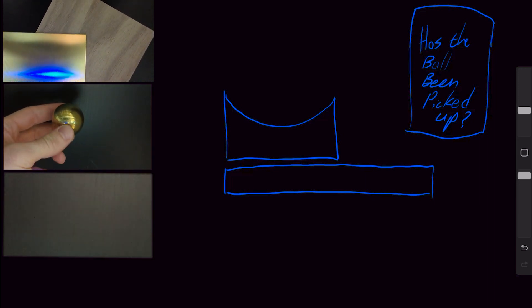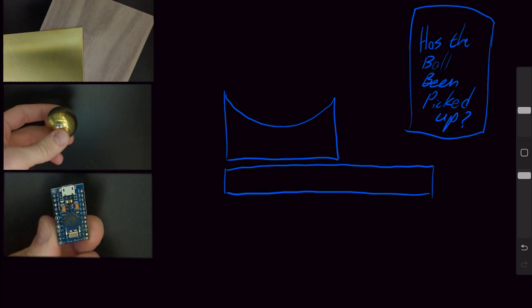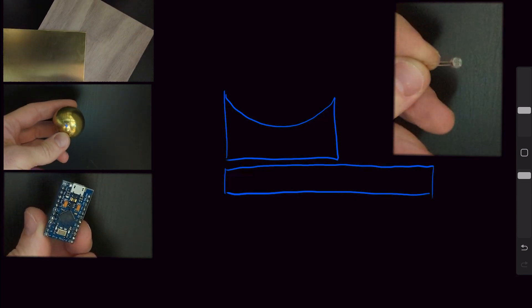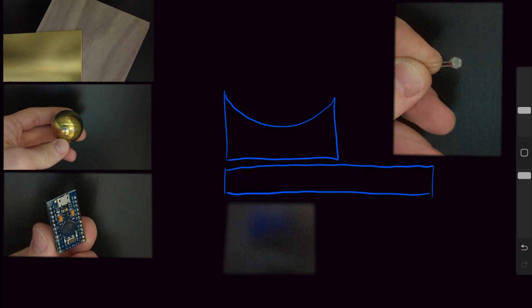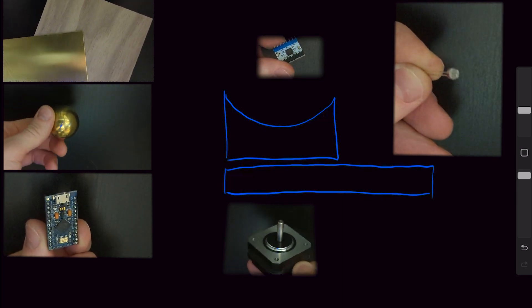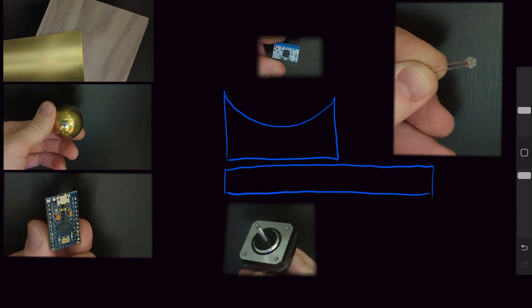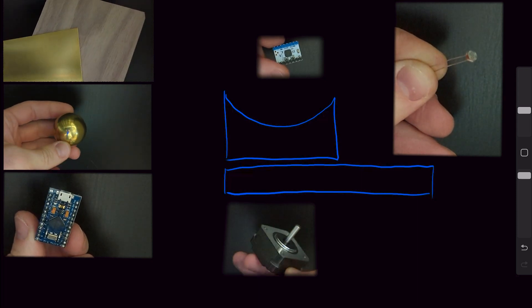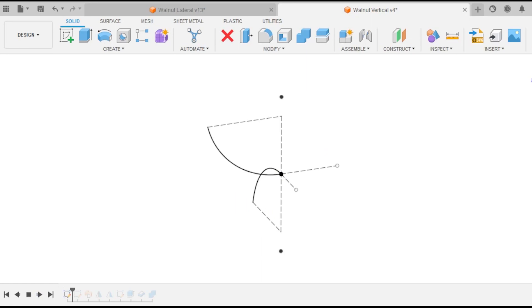For the electronics, I plan on using a small microcontroller to manage all the inputs and outputs, a photoresistor to detect if the ball has been picked up, and a small stepper motor to spin the saddle. To drive the motor, I know I'm going to need a stepper motor driver, and I plan on powering this whole thing with USB-C.